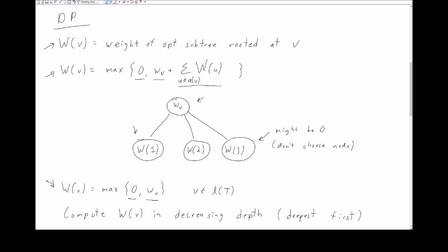In order to turn this into a dynamic program, we note that when finding the weight of the optimal subtree rooted at V, we need the values for all ancestors of that node to already be pre-computed. To get this right, we must start at the bottom of the tree and increase our depth progressively, starting at the deepest nodes and continuously going up levels to compute this function at progressively higher depth.